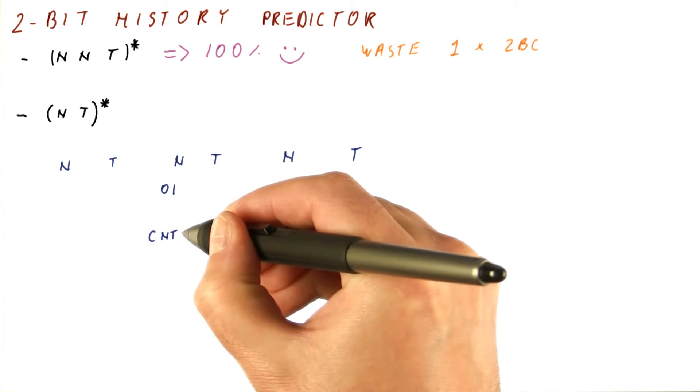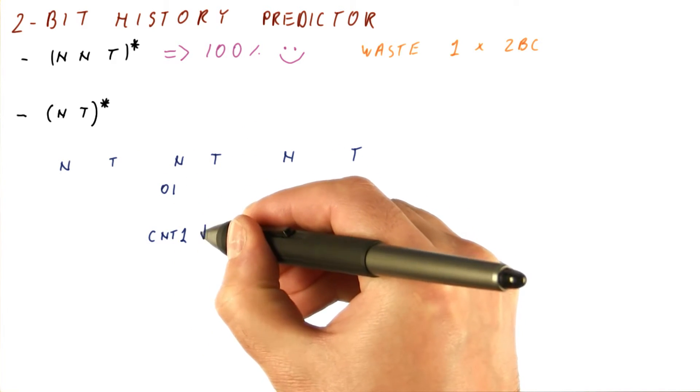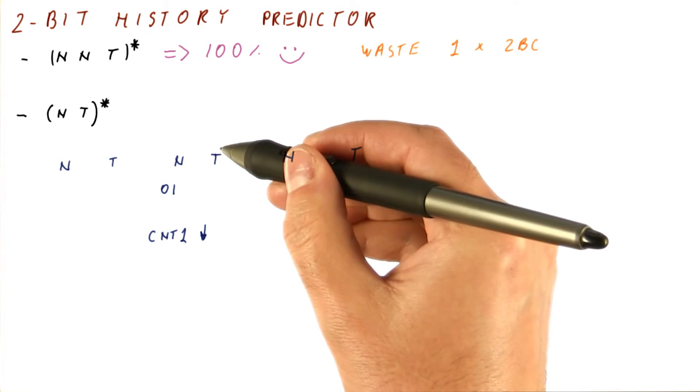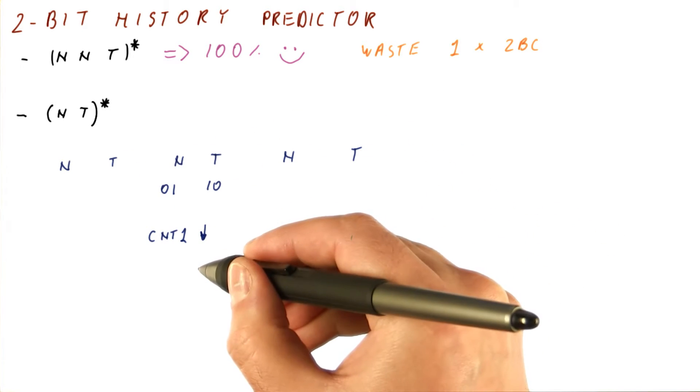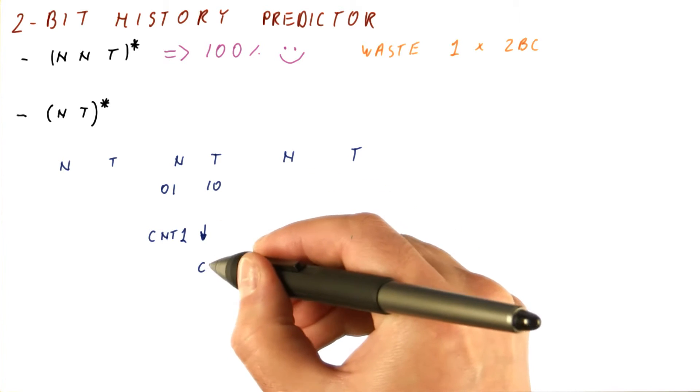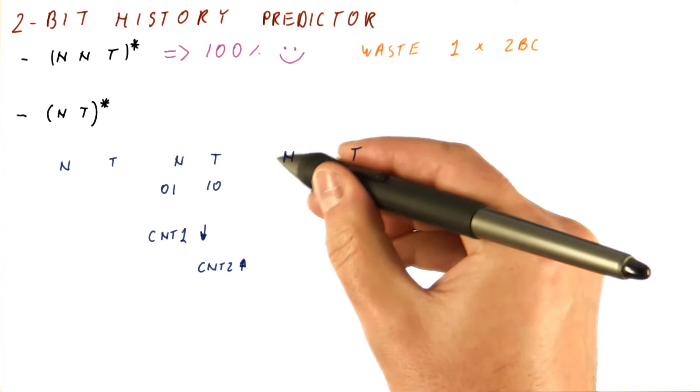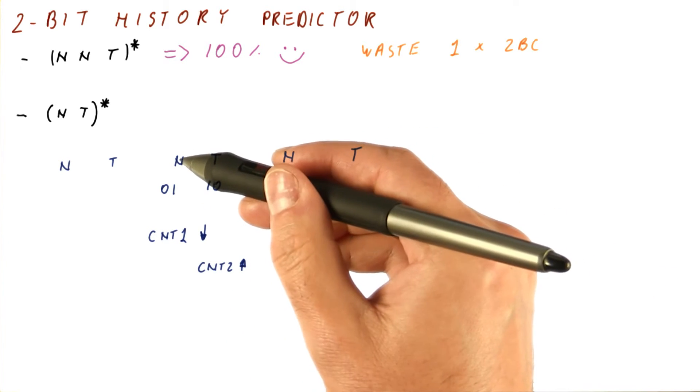That means counter 1 will be counting down. When we are trying to predict this, we have a history of 1, 0. And when we have 1, 0, that means counter 2 is counting up. For this, we again have a history of 0, 1.